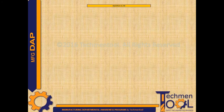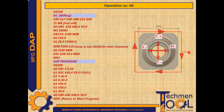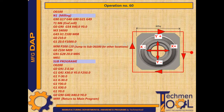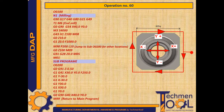Operation number 60 takes place at the three-axis vertical milling center. O0100 is the main program number. N1 is the sequence number. G90 G17 G40 G80 G21 G49 — absolute command, XY coordinate plane selection, cutter and canned cycle cancel, input in mm. T1 — selection of tool number 1. G0 G90 G54 X40 Y0 — X and Y rapid traverse with work offset and absolute command. M3 S4000 — spindle on clockwise. G43 H1 Z100 M08 — tool length compensation, Z movement and coolant on.